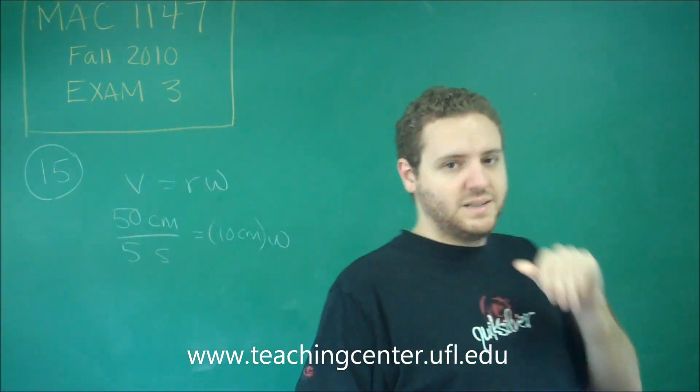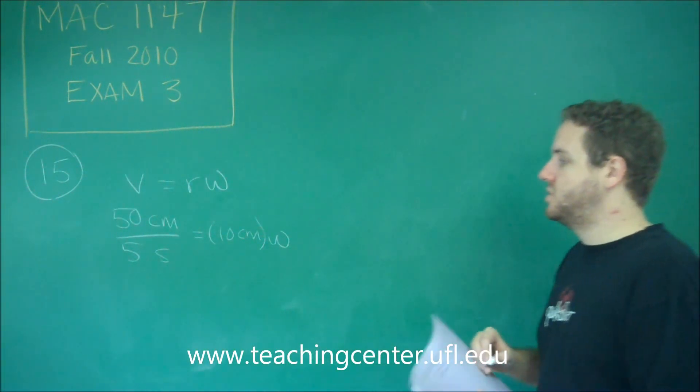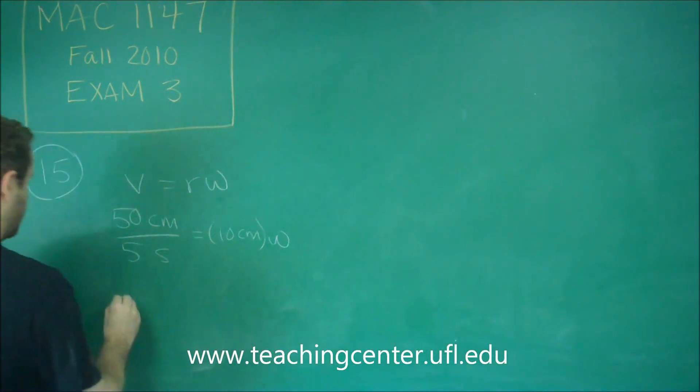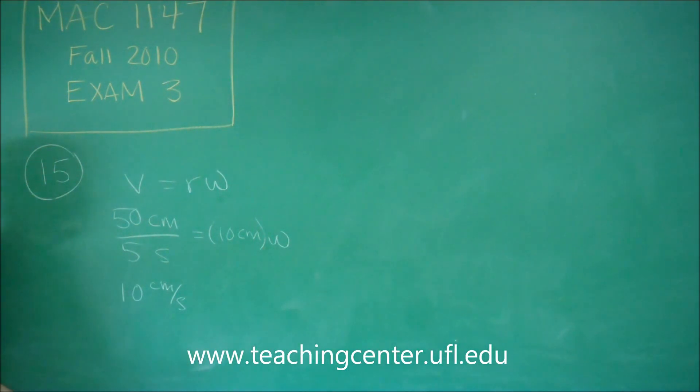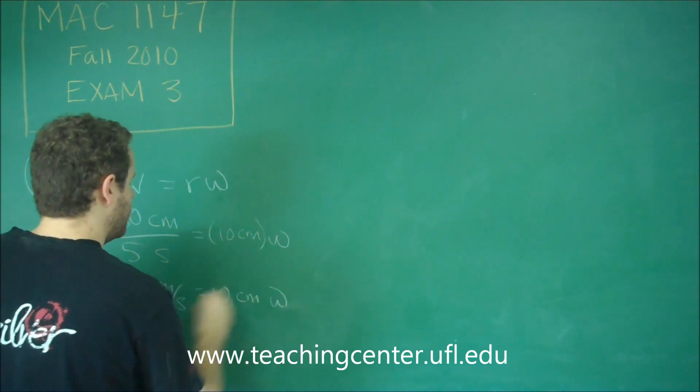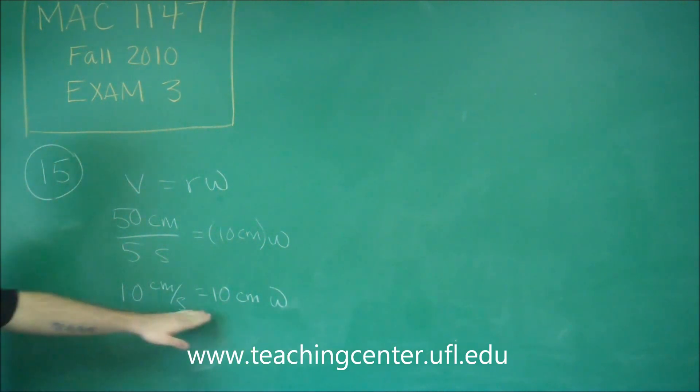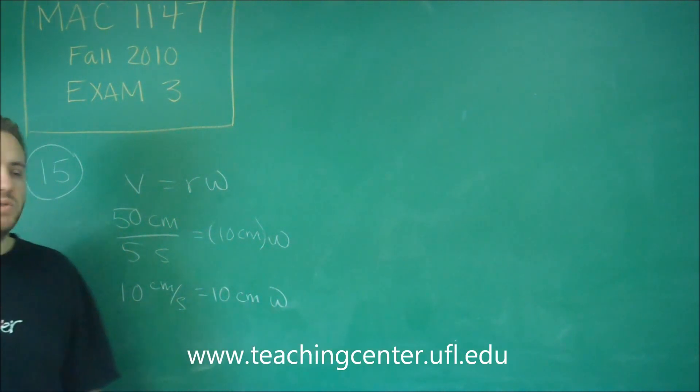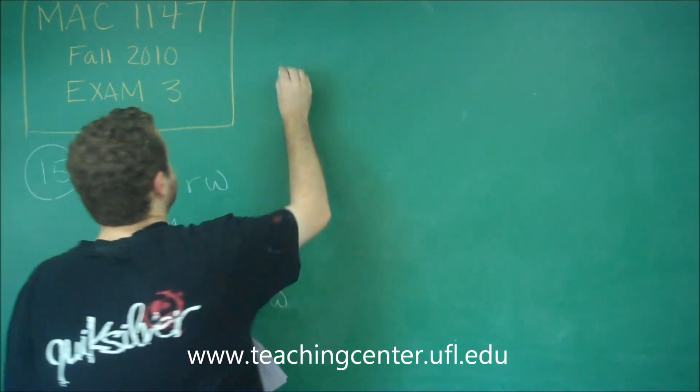We need to solve then for W. Here we get 10 centimeters per second by dividing 50 and 5. That's our linear speed. This equals 10 centimeters times W. You can see here, if this is 10, this is 10, W has to be 1.